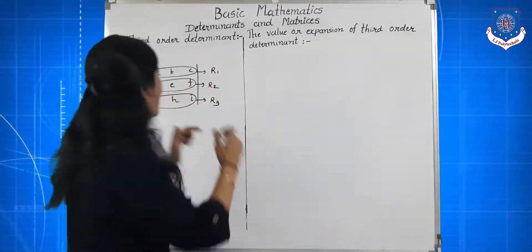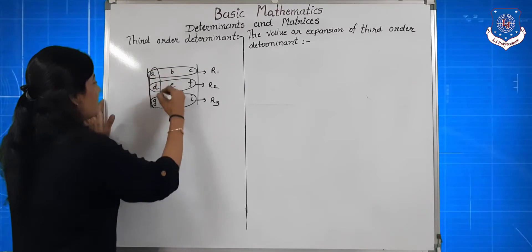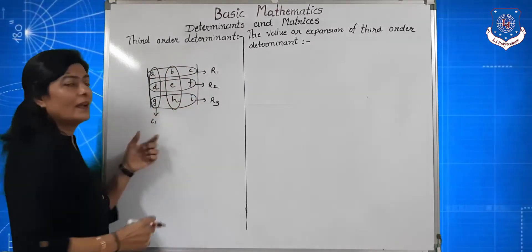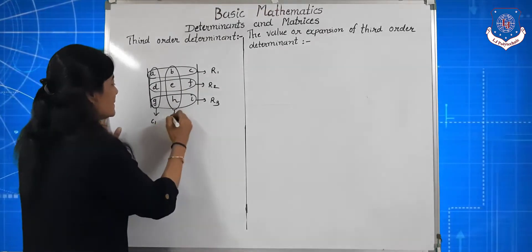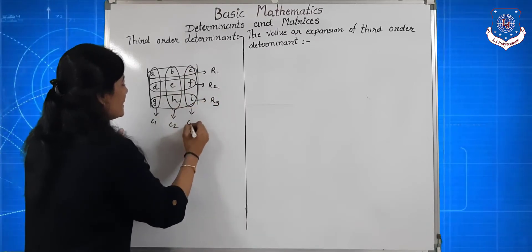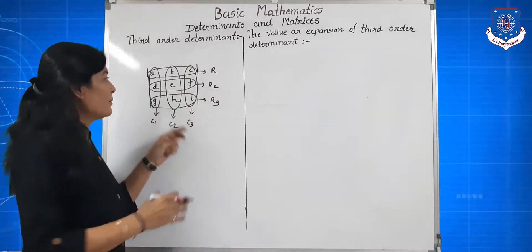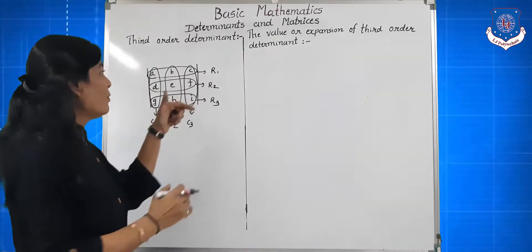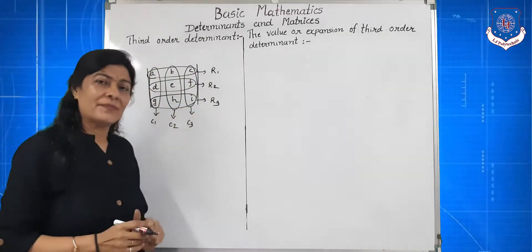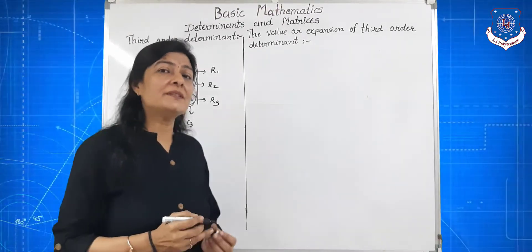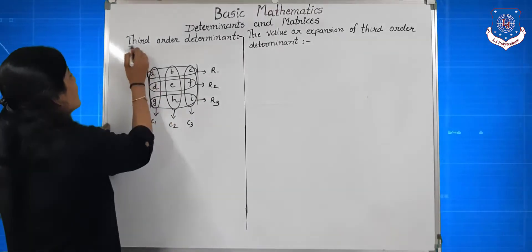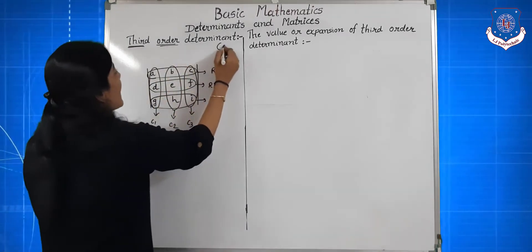Row means horizontal line. These are the elements of first column C1, second column C2, and third column C3. So total there are three rows and three columns. Row means horizontal line and column means vertical line. Three rows and three columns — this type of determinant is called third order determinant, or 3 by 3.